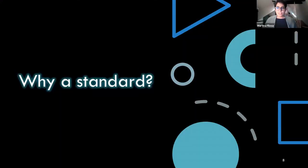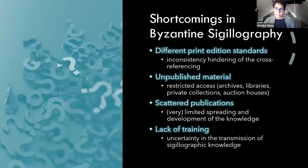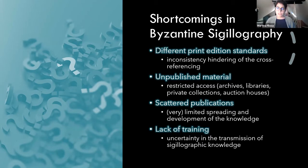We are here to talk about SigiDoc. Why did we think of doing an encoding standard? We noticed some shortcomings in Byzantine sigillography as far as consistency is concerned. First of all, we have different print edition standards which have inconsistencies — intrinsic inconsistency which hinders the cross-referencing of information. We have a lot of unpublished material: the unpublished material outweighs by a lot the material which is published. And we have restricted access to unpublished materials, because it is mostly kept by archives.